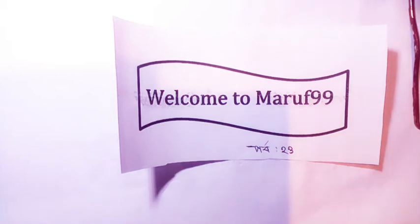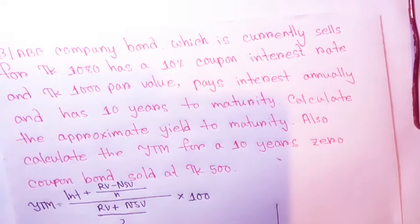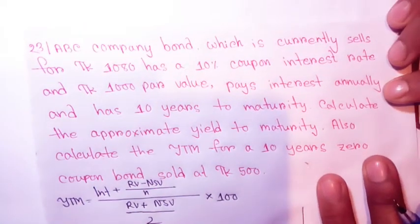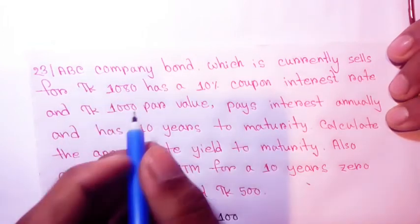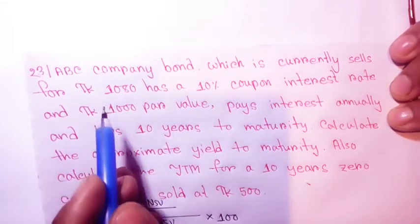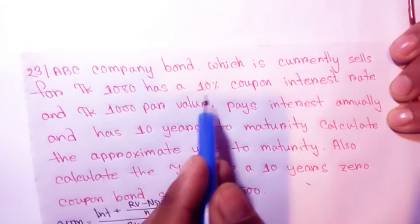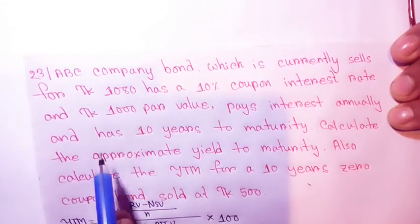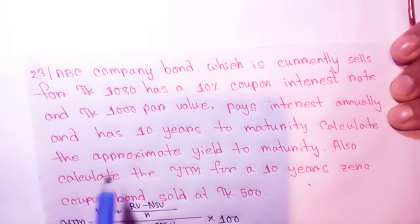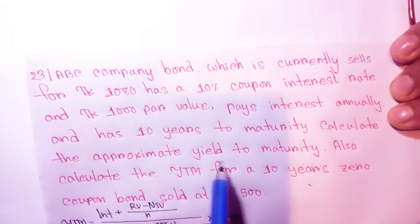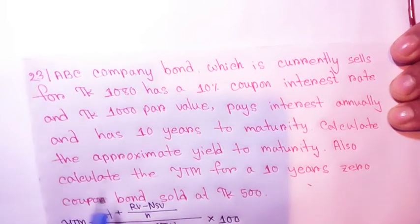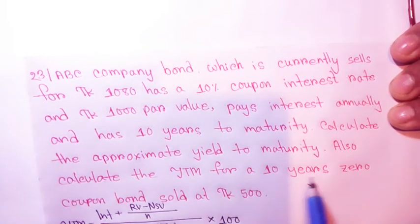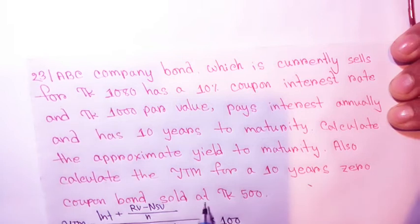Welcome! In this interest rates and bond valuation problem, we have a company bond which is currently selling for 880 taka. It has a 10% coupon interest rate and 1000 par value, pays interest annually, and has 10 years to maturity. Calculate the approximate yield to maturity.